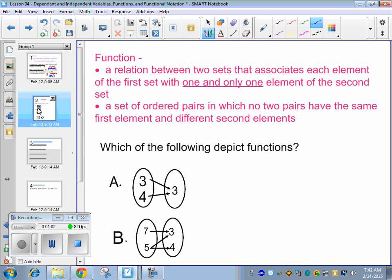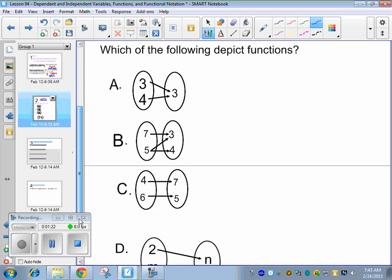So a function is a relation between two sets that associates each element of the first set with one and only one element of the second set. So the biggest thing is there's only one output for each one input. A set of ordered pairs in which no two pairs have the same first element and different... That's confusing. It's way easier, just try one.